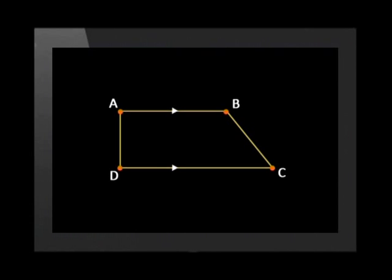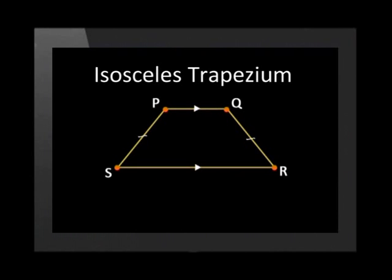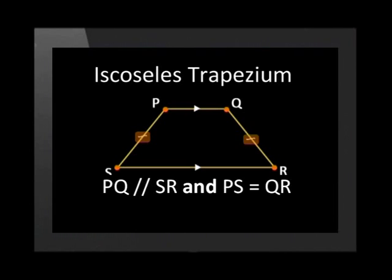A trapezium is a quadrilateral with one pair of opposite sides parallel. It has no special properties except if it is an isosceles trapezium. Then one pair of opposite sides is equal and the base angles are equal.